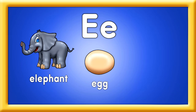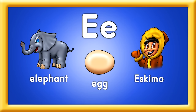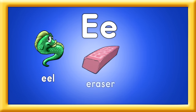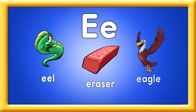Elephant, egg, and eskimo. These are some of the E words I know. Eel, eraser, and eagle, too. These are E words just to name a few.